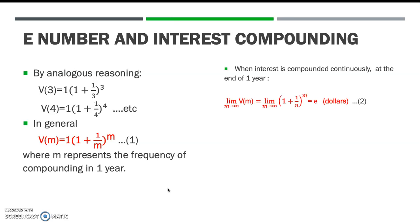When interest is compounded continuously during the year, or when M becomes infinite, the value of the asset will grow in a snowballing fashion. At the end of year 1, the value of our asset grows as follows. We use the limit approach where M approaches infinite, because if interest is compounded continuously, it is compounded many times approaching infinite. Using the limit as M approaches infinite, equation 2 results in the Euler number.